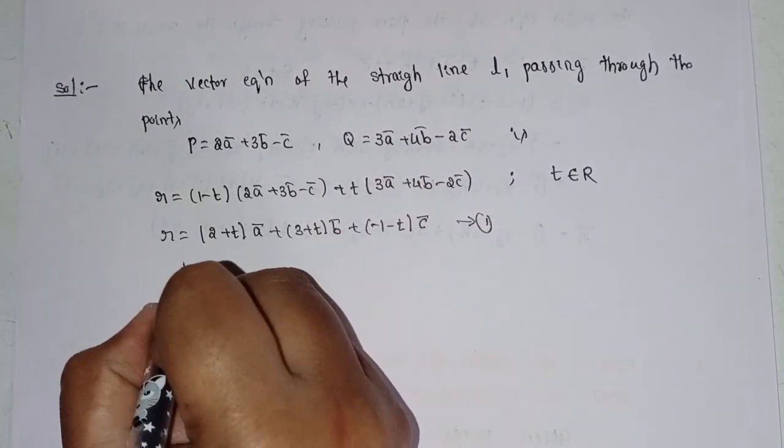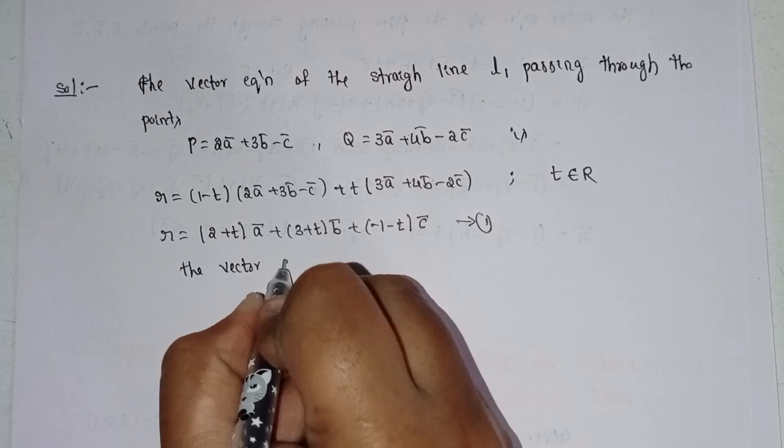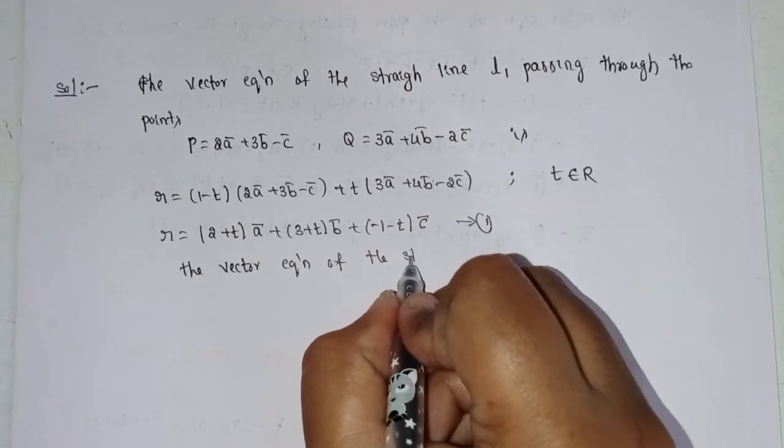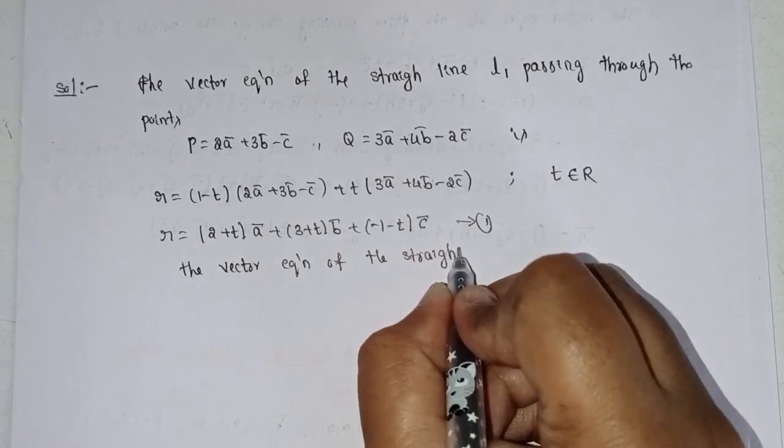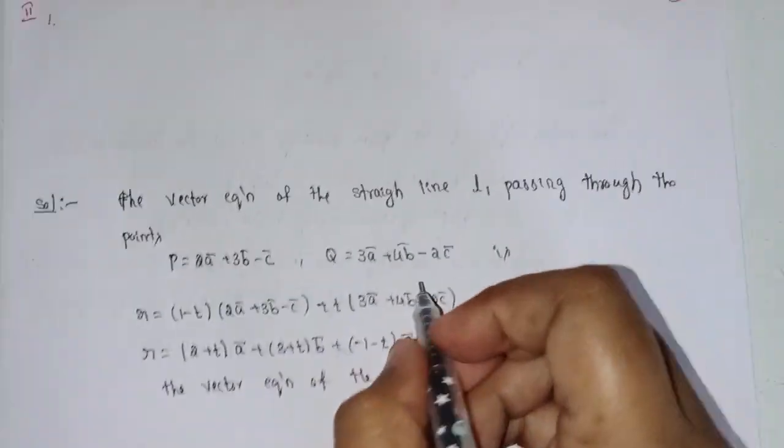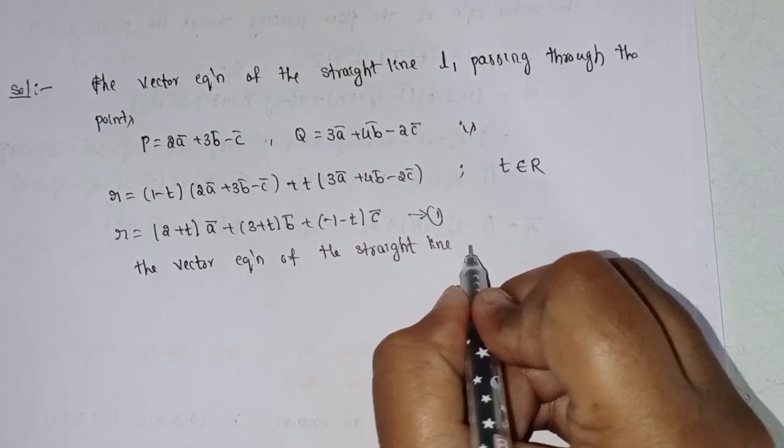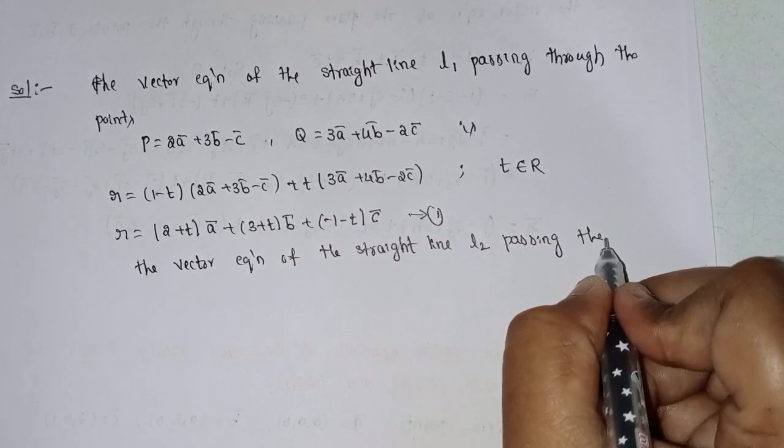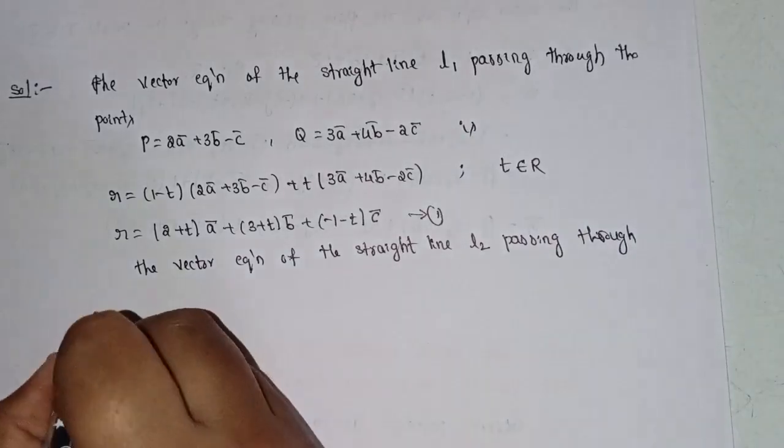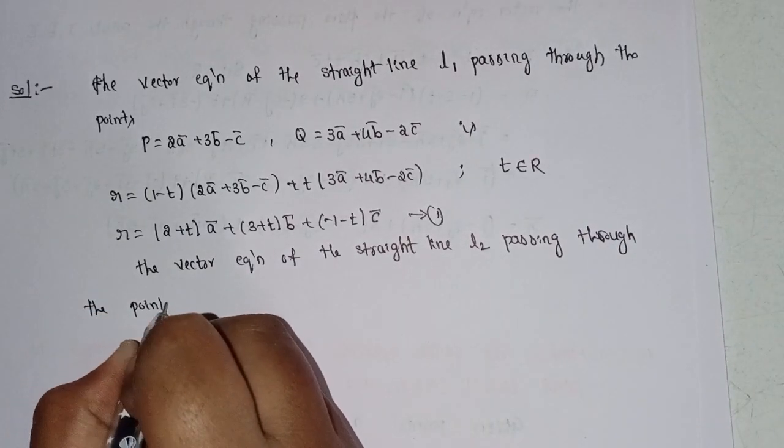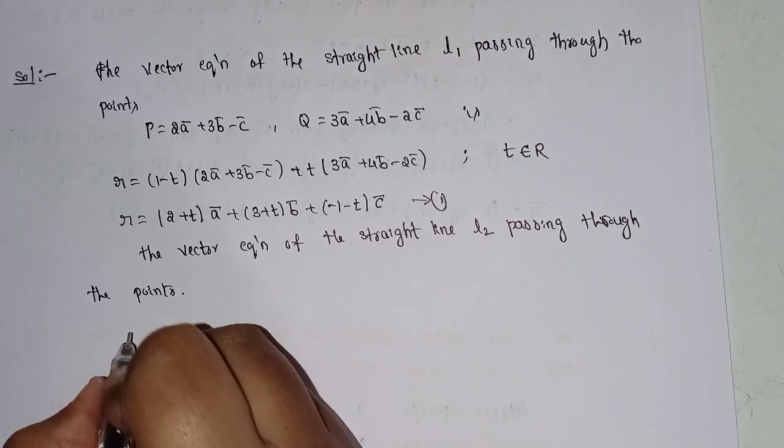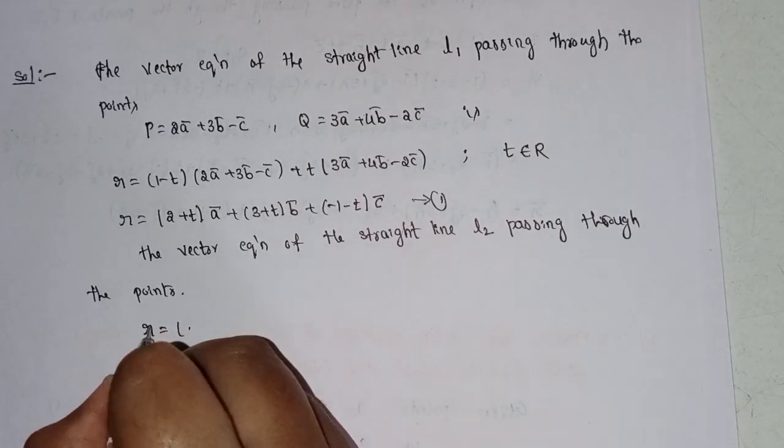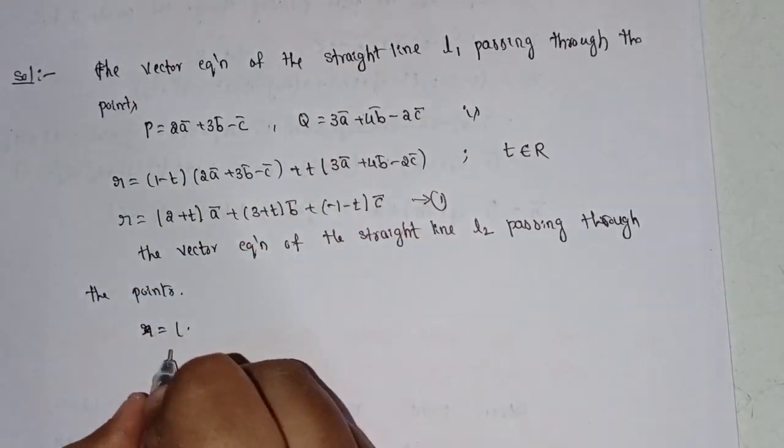The vector equation of the straight line L2 passing through the points r equal to: